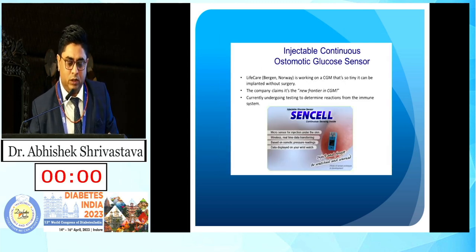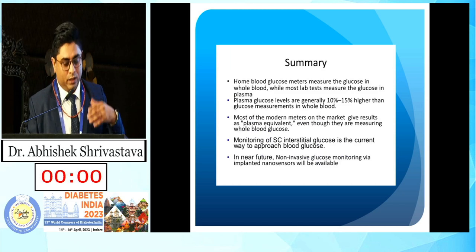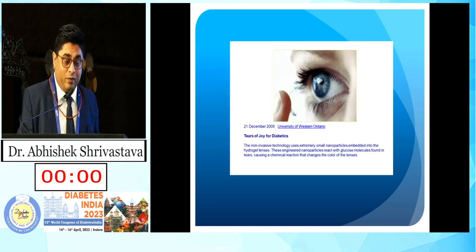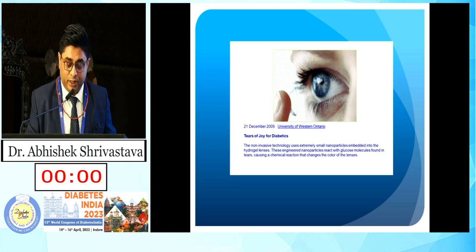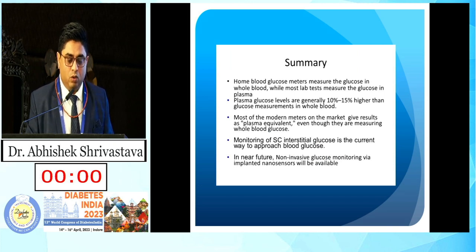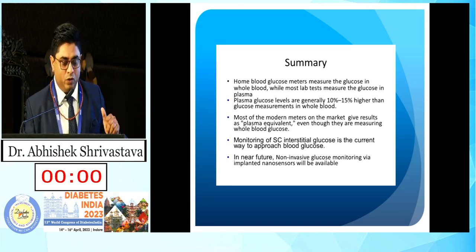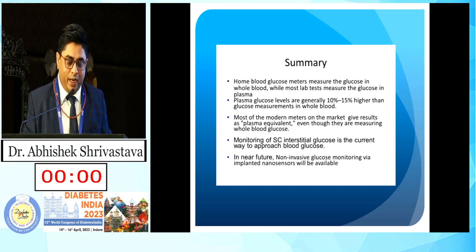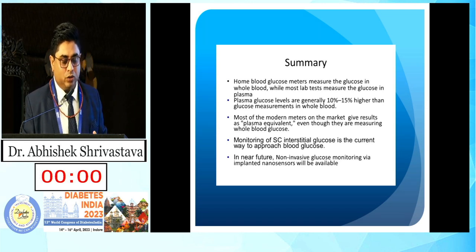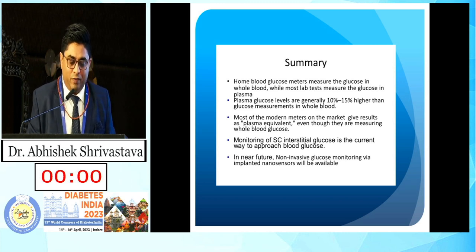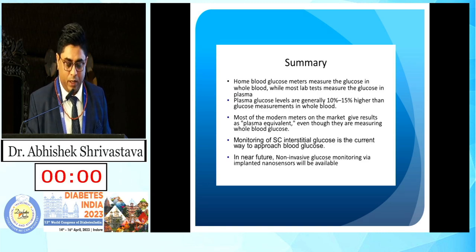There are certainly some emerging technologies: injectable continuous osmotic glucose sensors and tear sensors are already in the market, providing highly future-generating generation sensors. To summarize: home blood glucose meters measure glucose in whole blood, while most lab tests measure glucose in plasma. Plasma glucose levels are generally 10–50% higher than whole blood glucose measurements, but most modern meters on the market give results as plasma equivalent. If you are monitoring glucose levels subcutaneously or via interstitial fluid, it is the current best way to assess glycemic variability. In the near future, non-invasive glucose monitoring with implanted non-sensors will certainly be available. Thank you.